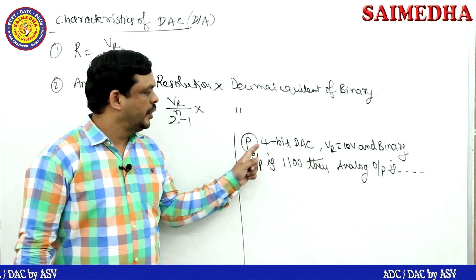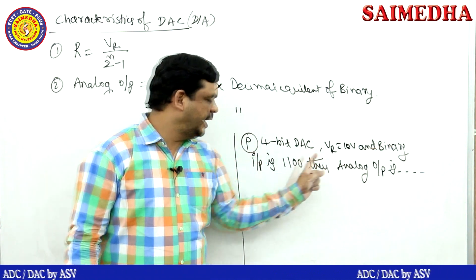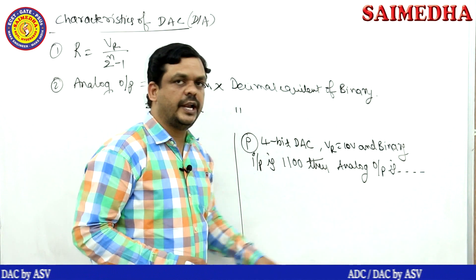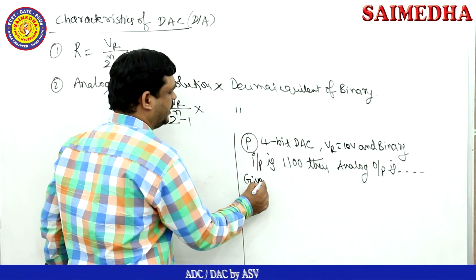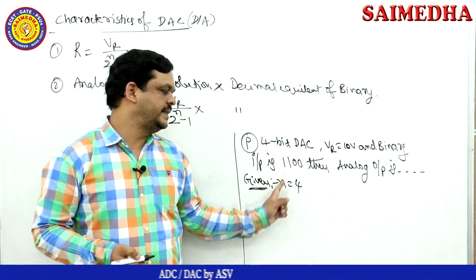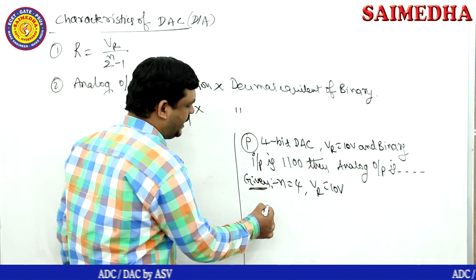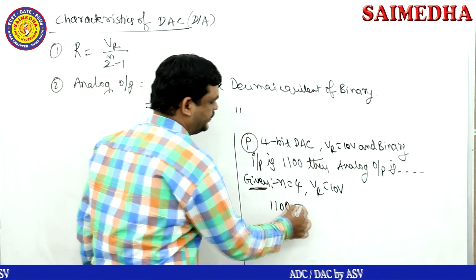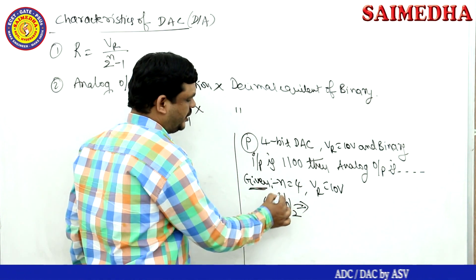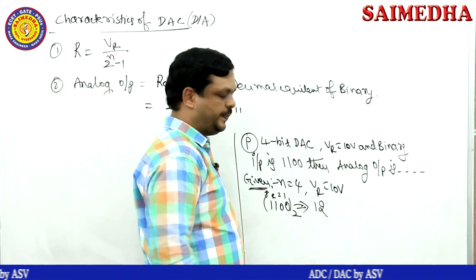Here is an example: a 4-bit DAC with reference voltage 10 volts and binary input 1100. We need to find the analog output. Given: n = 4, reference voltage V_R = 10 V, binary input = 1100. The decimal equivalent of 1100 is: 8 + 4 = 12.